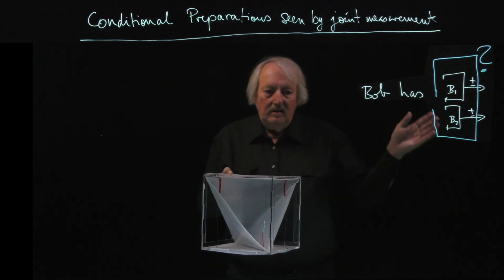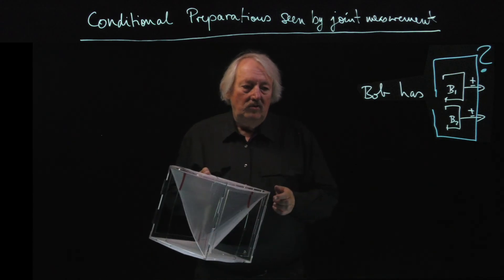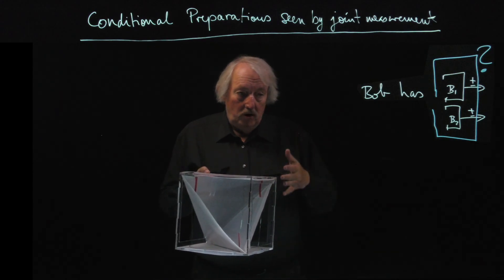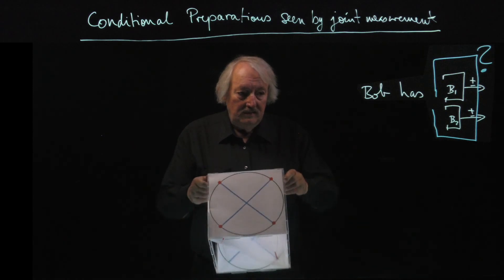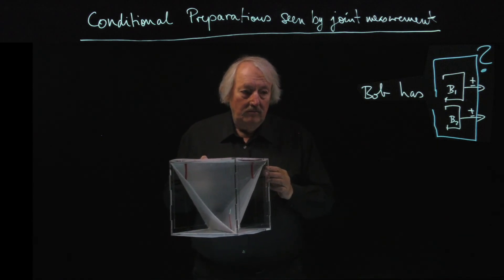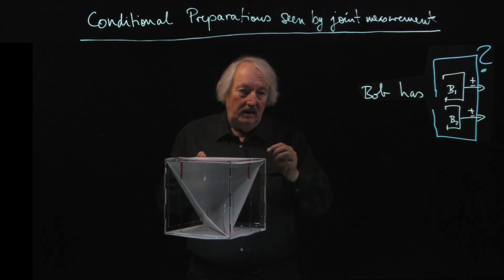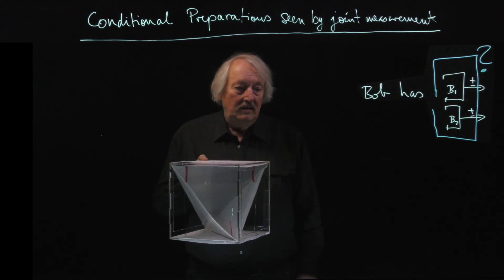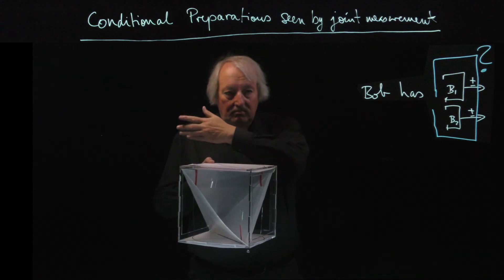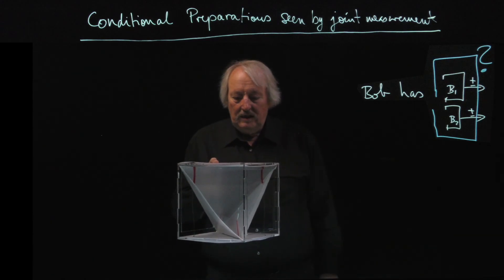In conclusion, if Bob has the joint measurement he doesn't just see the 2D diagram — he sees the full 3D diagram. By looking at the sign of the product he can actually decide, or make a good guess at, which measurement Alice made.